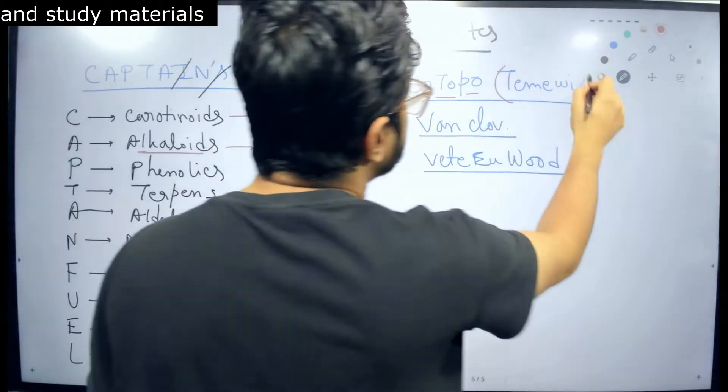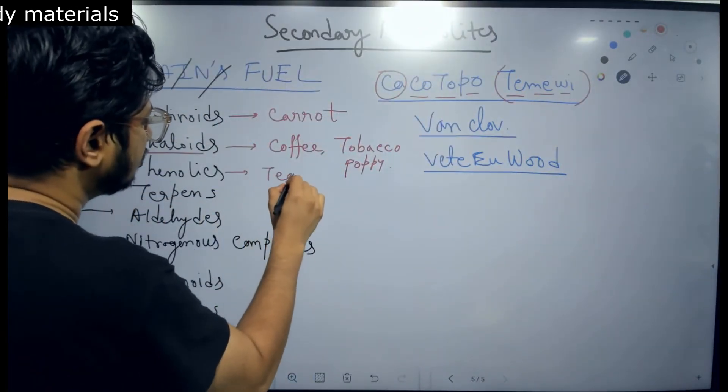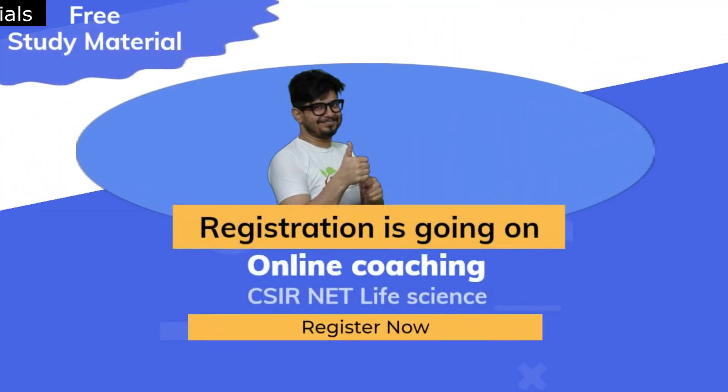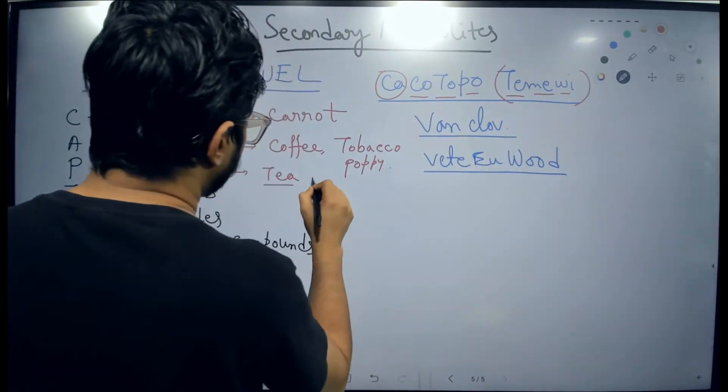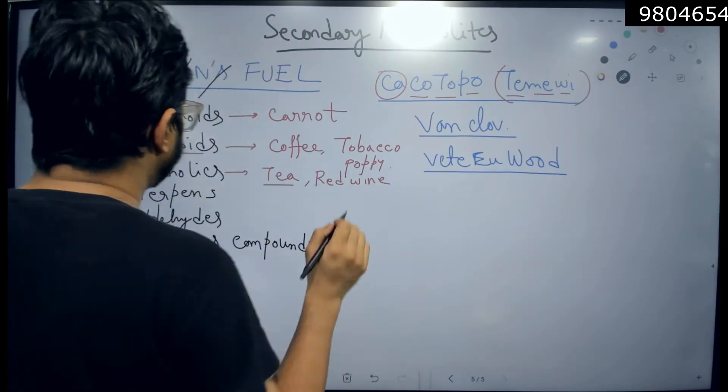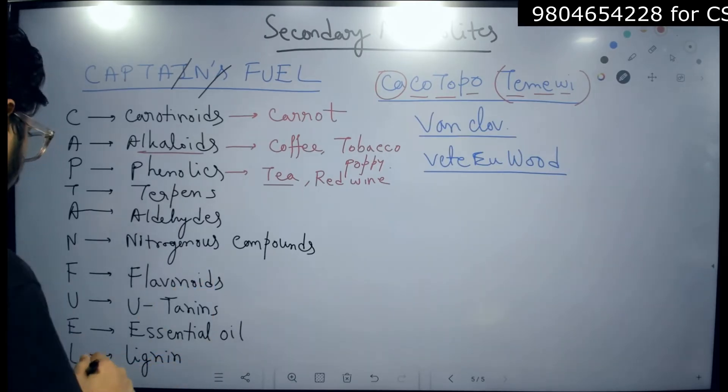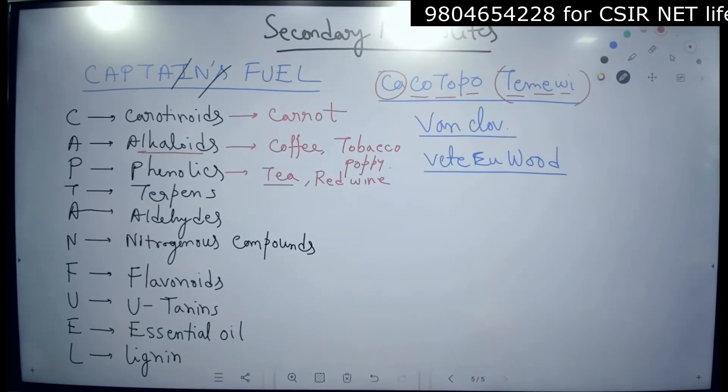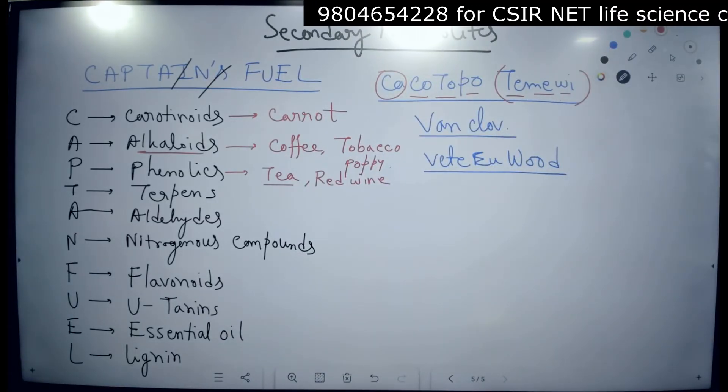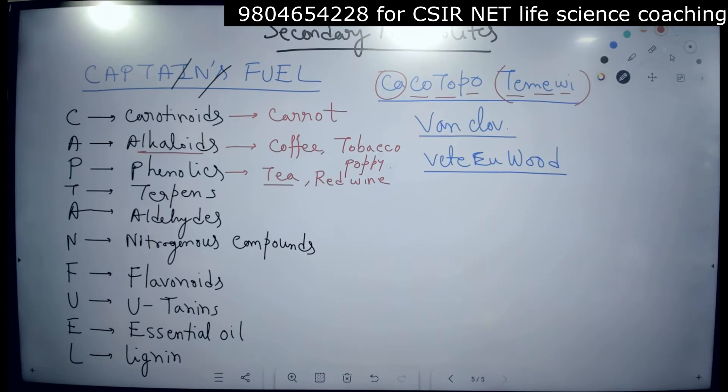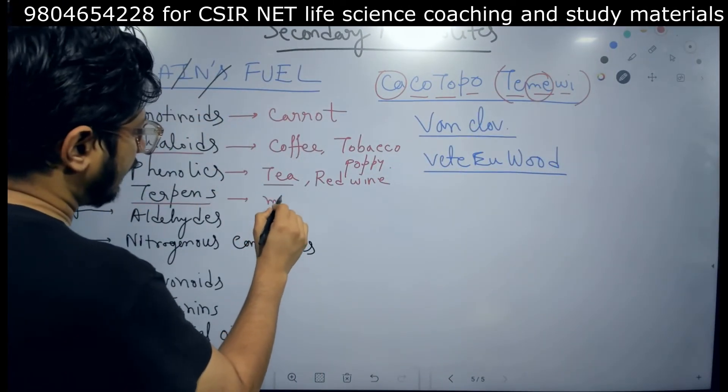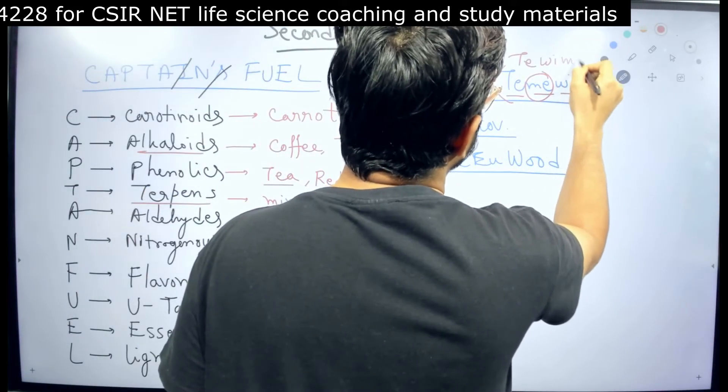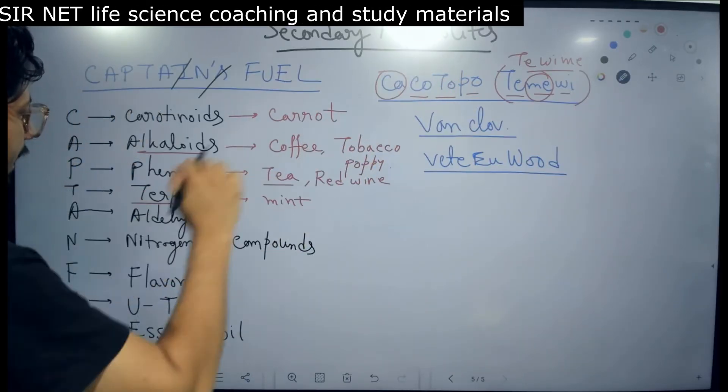Then you have phenolics. Example for the phenolics, you can see T-ME-V. In phenolics we have T for tea and we also have V for wine, red wine. The next one is terpenes, so you have ME for mint. Actually you should write it like T-V-ME, so T for tea, red wine for V, and terpenes for mint.